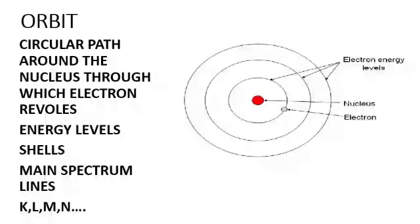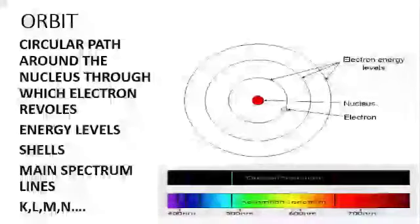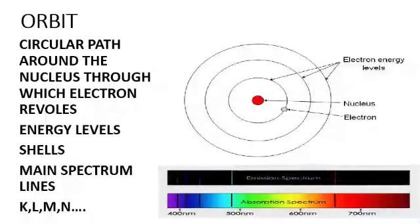We know that an electron can absorb energy as well as emit energy. When an electron absorbs or emits energy, a band of seven colors is produced. This band of seven colors is called a spectrum. The spectrum contains various lines. These spectrums contain some main lines. Main lines basically represent the energy levels or shells.